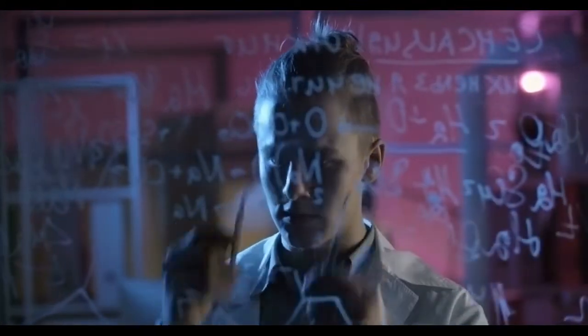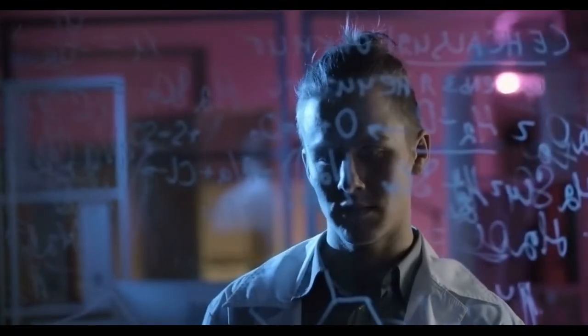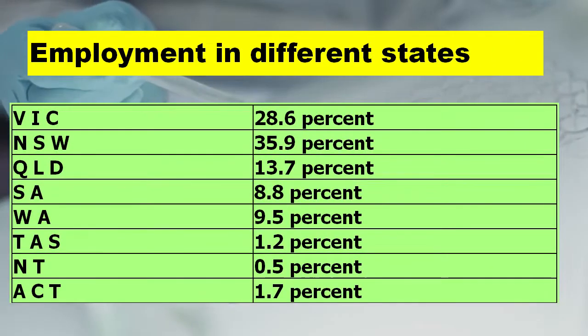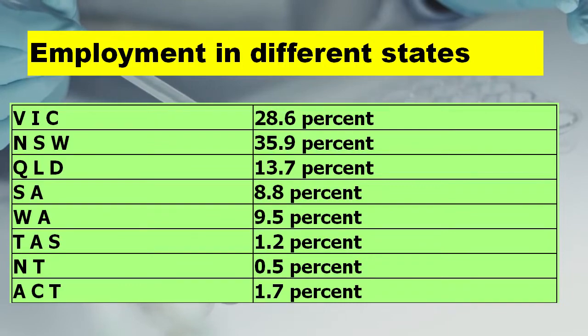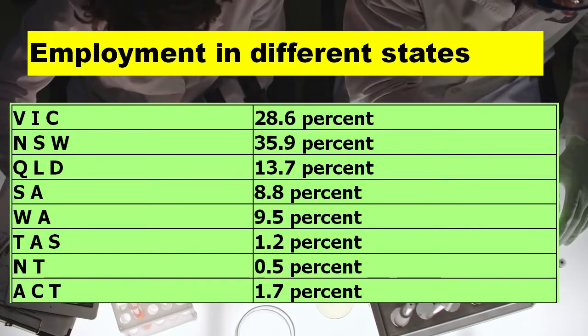Now let's talk about the employment of Biomedical Engineers state and territory-wise. The percentage of Biomedical Engineers employed in VIC, NSW, QLD, SA, WA, TAS, NT, and ACT is 28.6%, 35.9%, 13.7%, 8.8%, 9.5%, 1.2%, 0.5%, and 1.7% respectively.